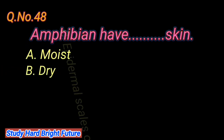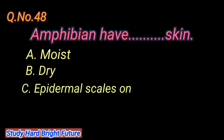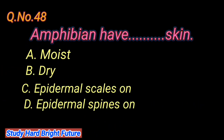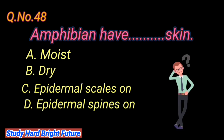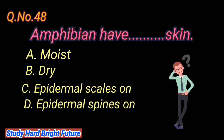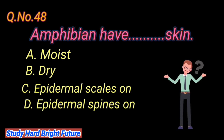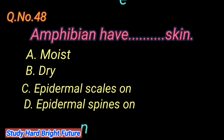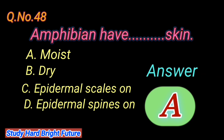Question number 48: Amphibians have moist skin. A. Moist, B. Dry, C. Epidermal scales on, D. Epidermal spines on. The right answer is A. Moist.